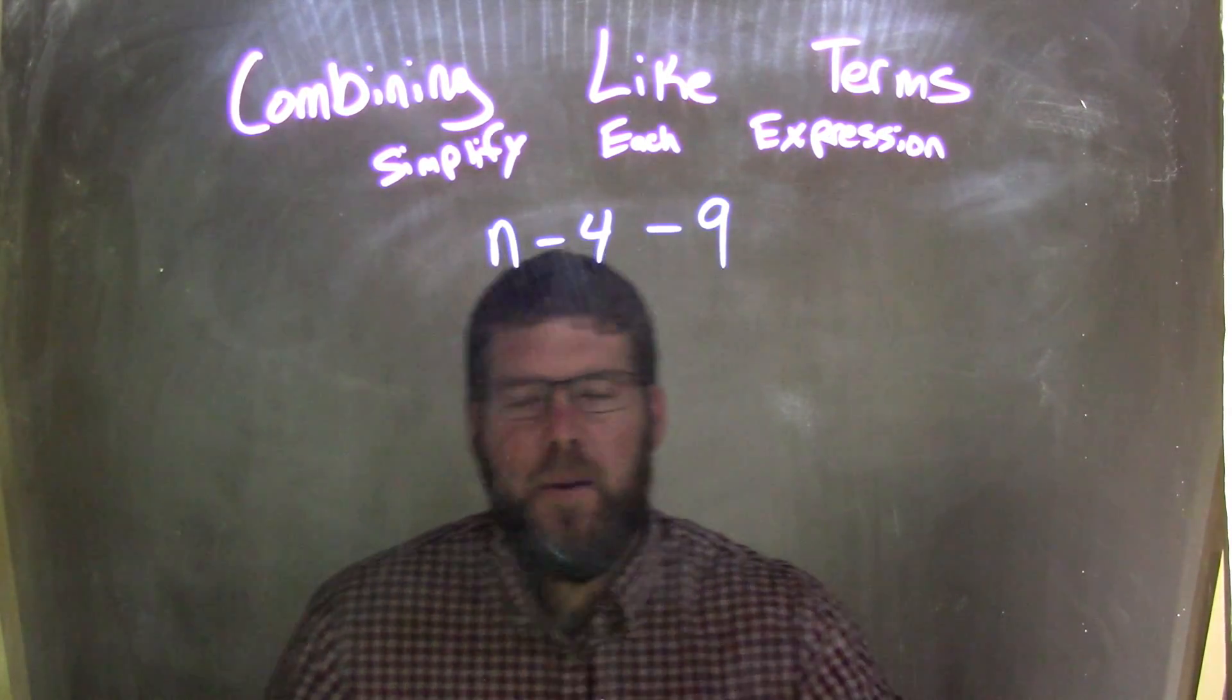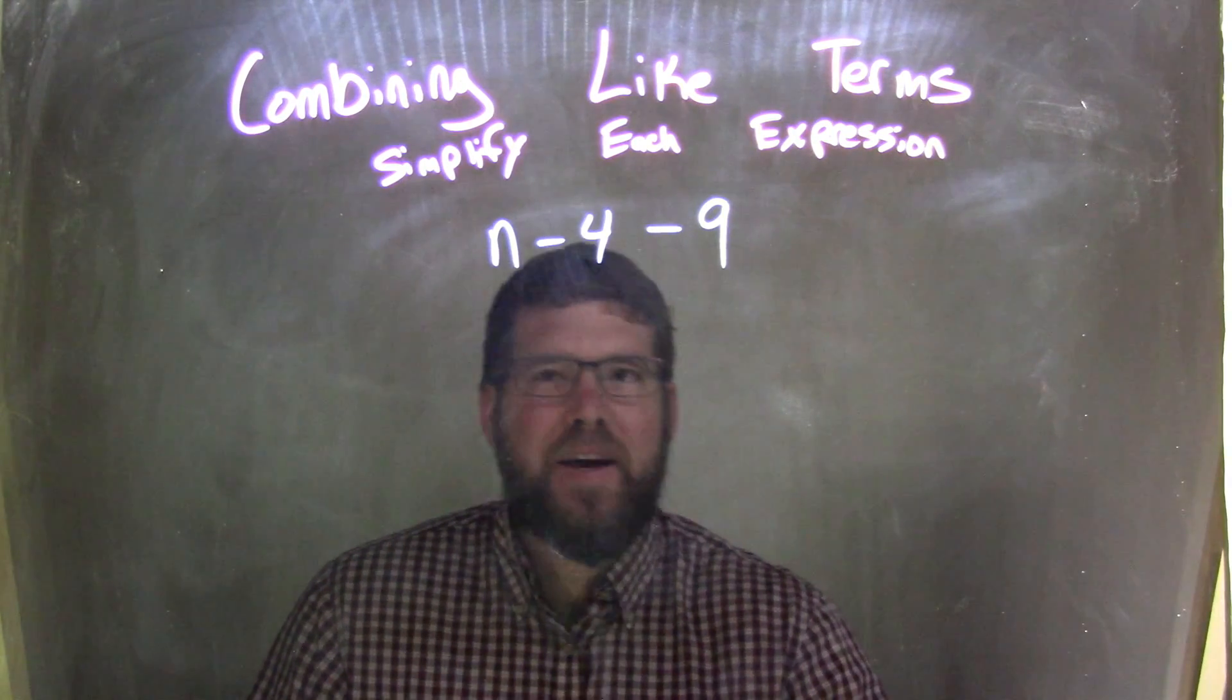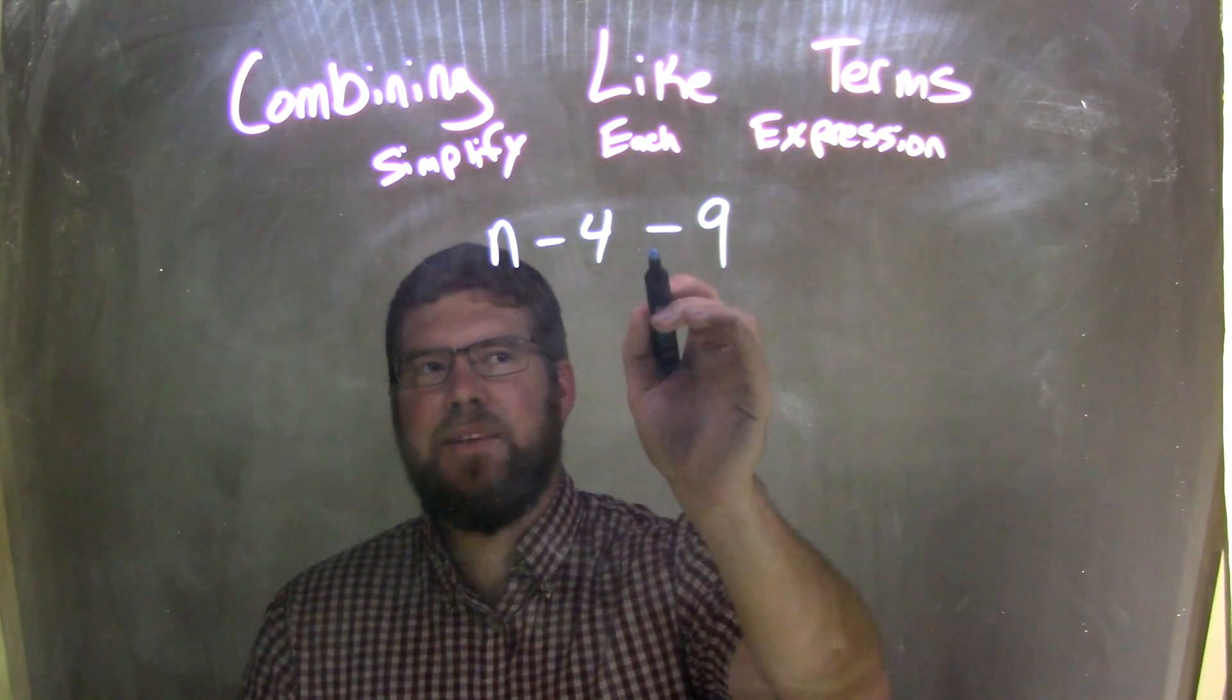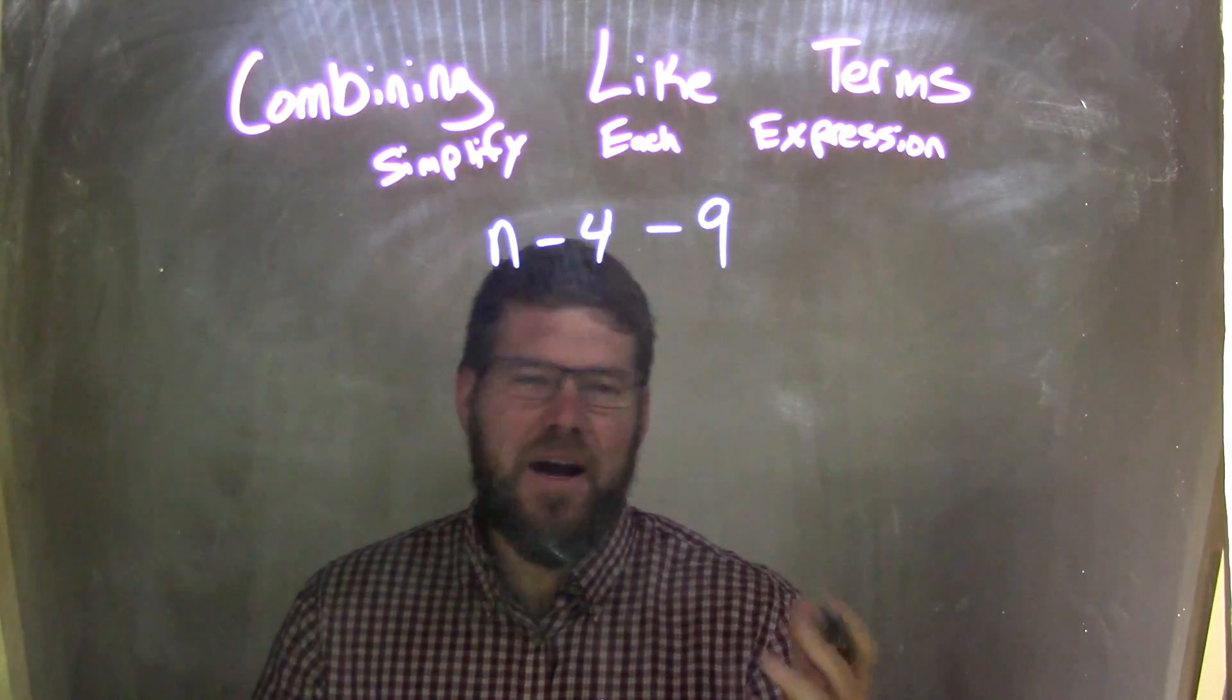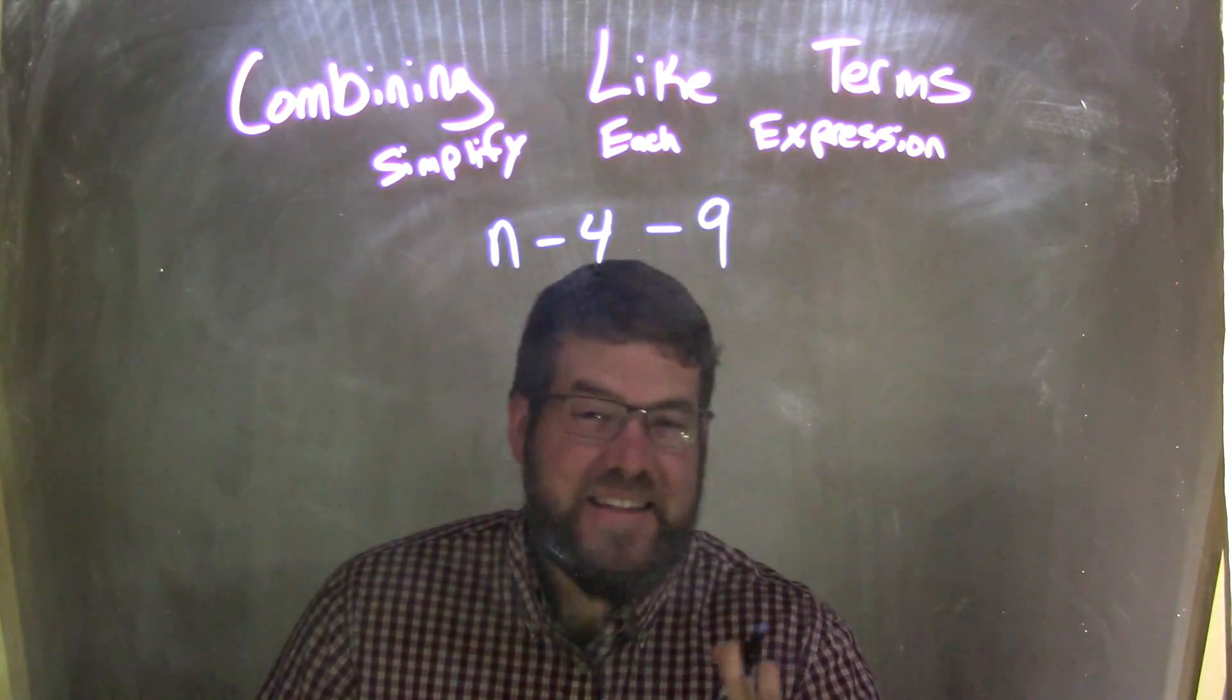Well, we want to combine our like terms, and this gets tricky. We have n minus 4 and then subtracting 9. Plenty of students will just do 4 minus 9 and be done and they'll get like negative 5 and that's it. But that's incorrect.